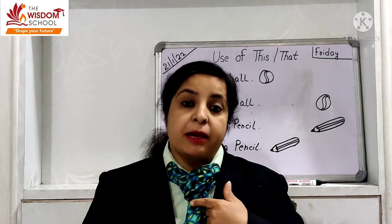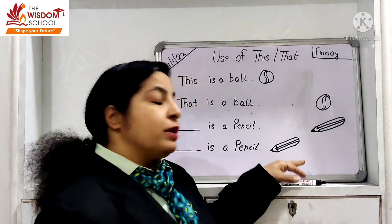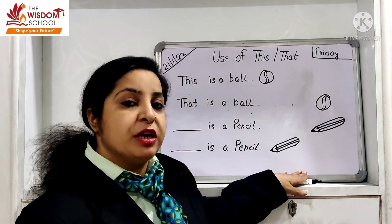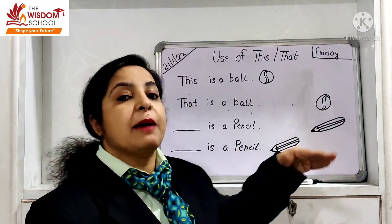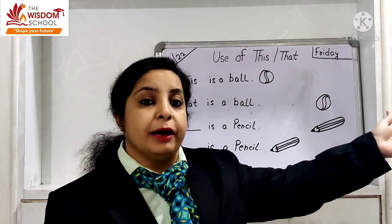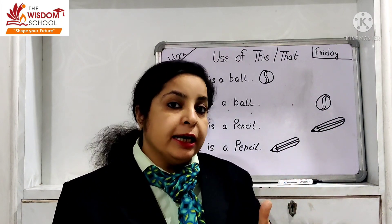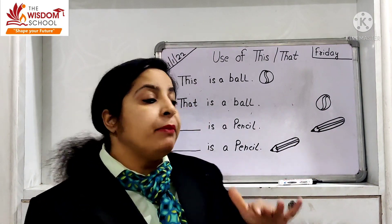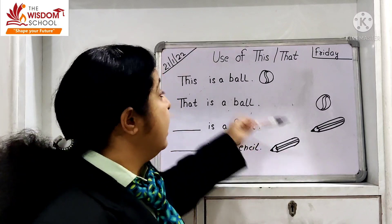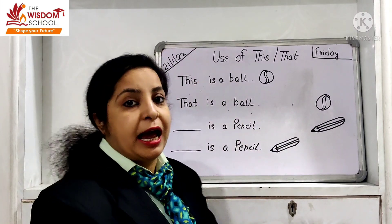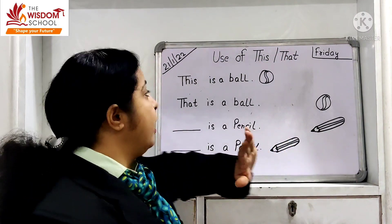This — jo cheez aapke paas hai, jo cheez aapke paas mein rakhi hai, jahan bhi marker aapke paas hai, toh aap this ka use karo ge. Agar koi bhi cheez aapse door padi hai, toh that ka use karo ge. Ab main aapko waise bataati hoon — jaise ki board ke paas kya likha hai? Use of this and that.